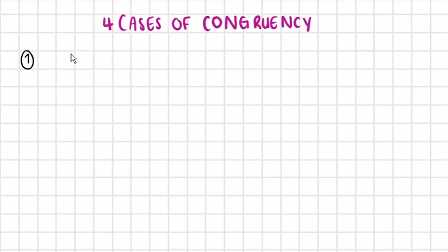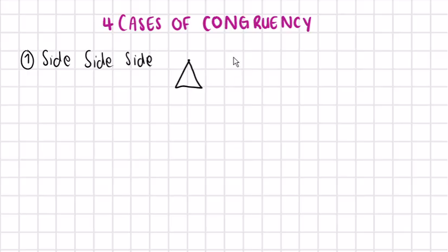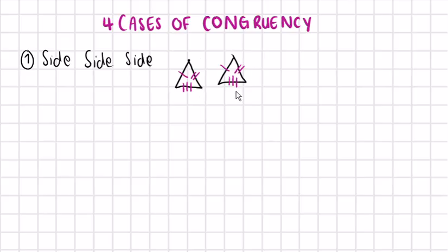The first way to prove congruency is side-side-side. This is when we have two triangles and we have three sides in both triangles being equal — that side being equal to that side, that being equal to that, and the large side equal to that side. So these two triangles will be congruent.